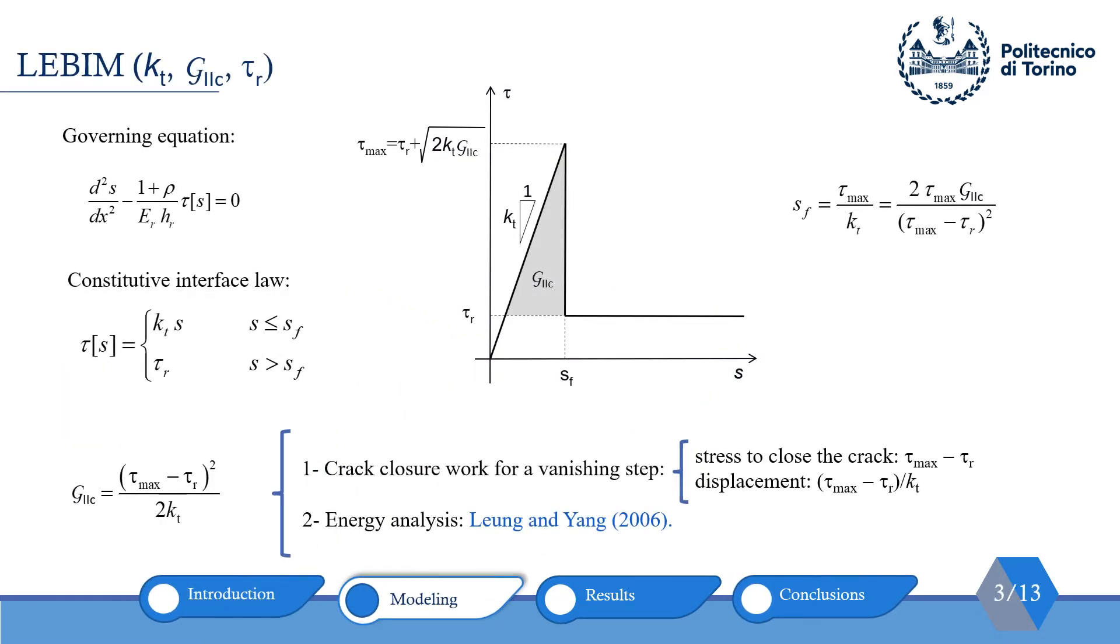From the last slide, we have the governing equation. Next, we need to determine tau of s. Here, we use LEBIM or linear elastic brittle interface model. The constitutive law for such a model can be written as tau(s) equal to kt·s if s less than or equal to sf, or tau_r if s greater than sf. sf can be calculated with this equation, tau_max over kt.